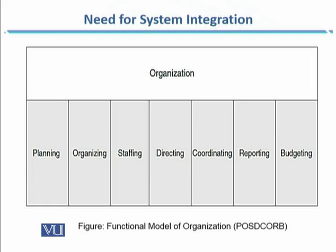The formal functions — Staffing, Directing, Coordinating, Reporting, and Budgeting — are performed across departments. The classification of an organization into departments like Accounting and Human Resources reflects the breaking of complex tasks into smaller, manageable tasks that can be assigned to a group of people who can then be held responsible. That is the horizontal silo.